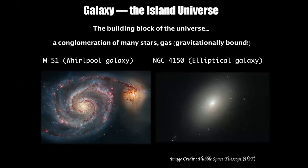Some of them are elliptical in shape and are rather featureless. They are called elliptical galaxies, like the NGC 4150 galaxy shown here on the right. There are other galaxies too, which have a disk morphology and often exhibit spectacular spiral structure. The Whirlpool Galaxy is a classic example of this kind, shown on the left. These are called disk galaxies, and since they have spiral structure, they are often alternatively referred to as spiral galaxies.